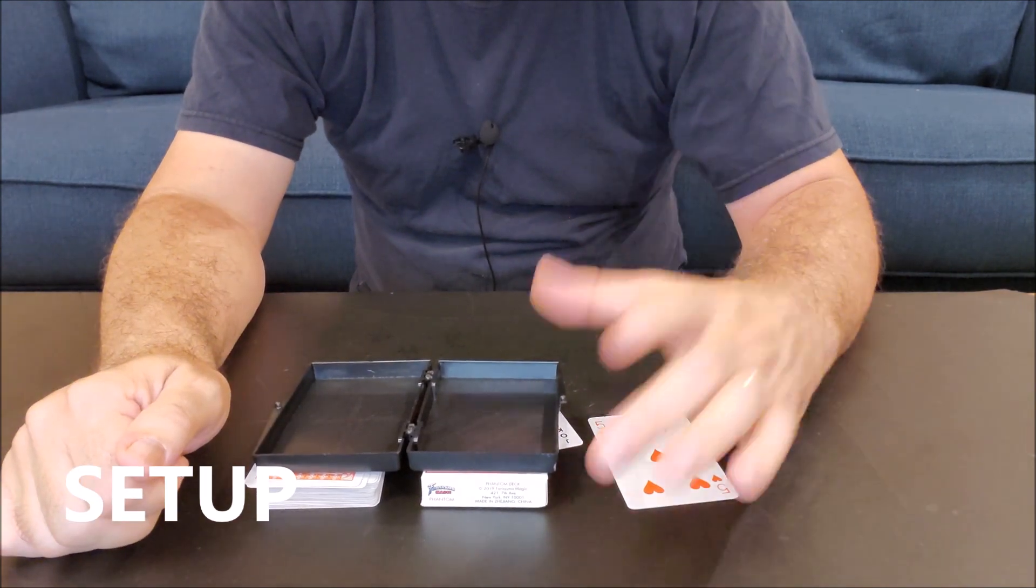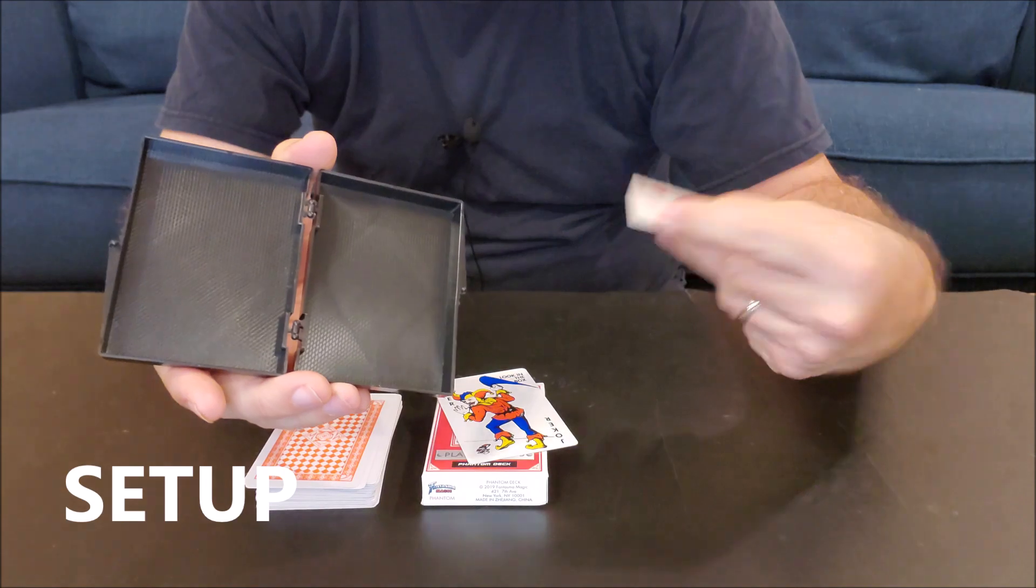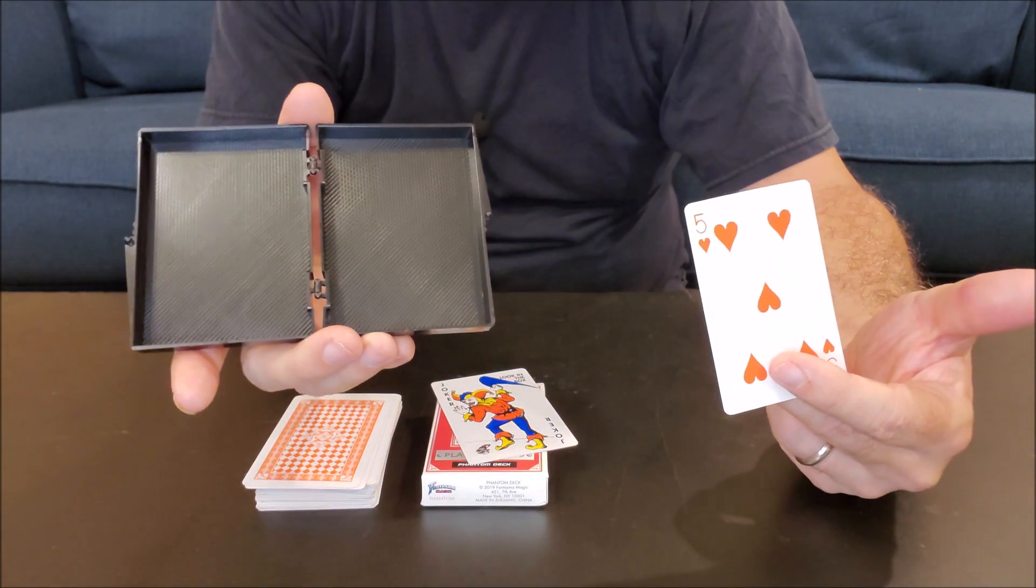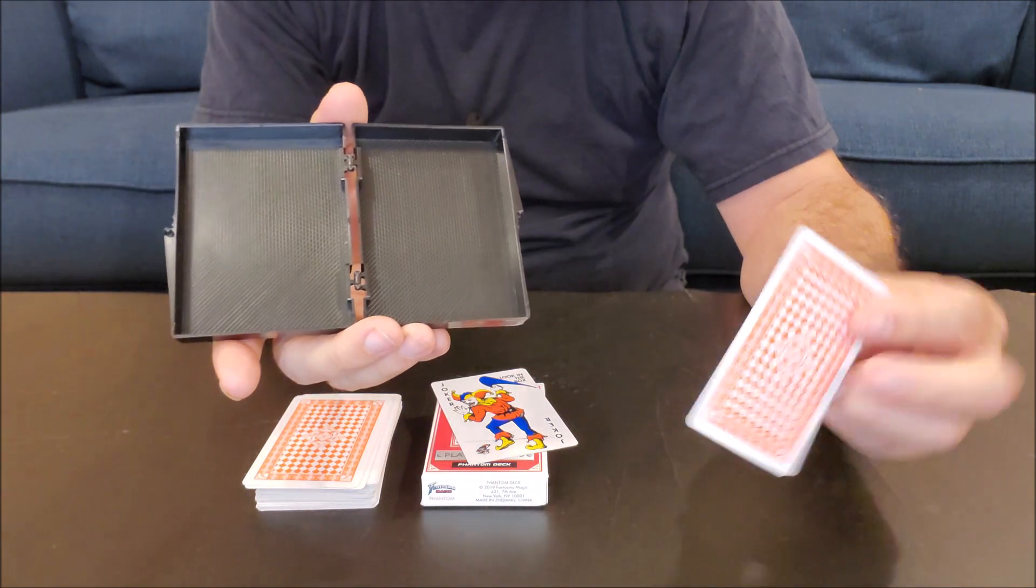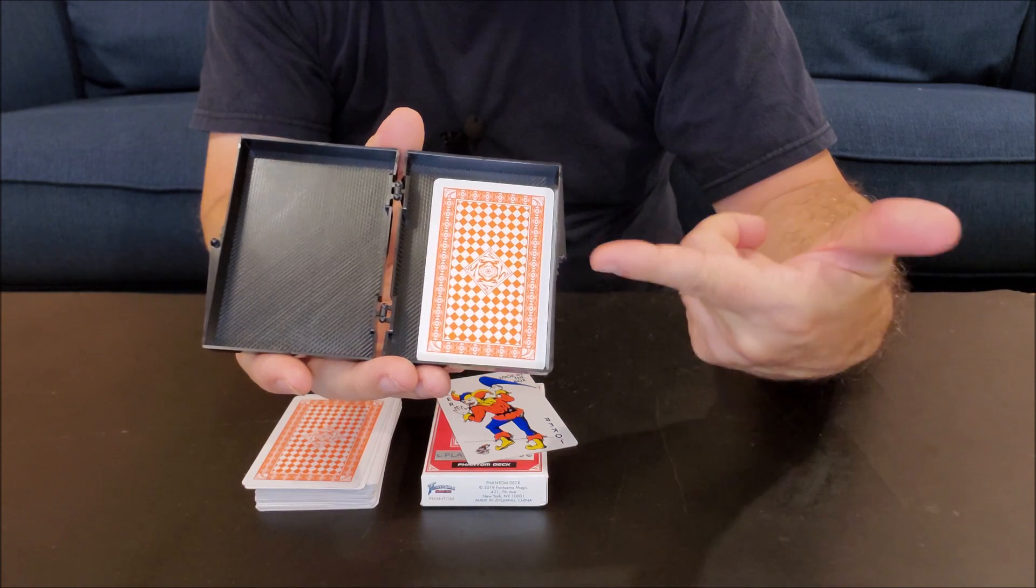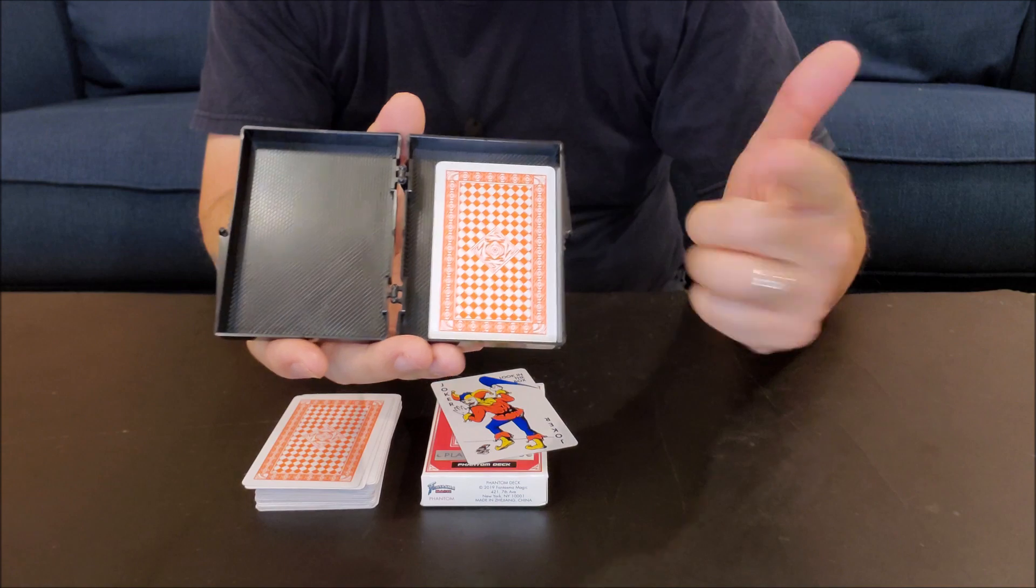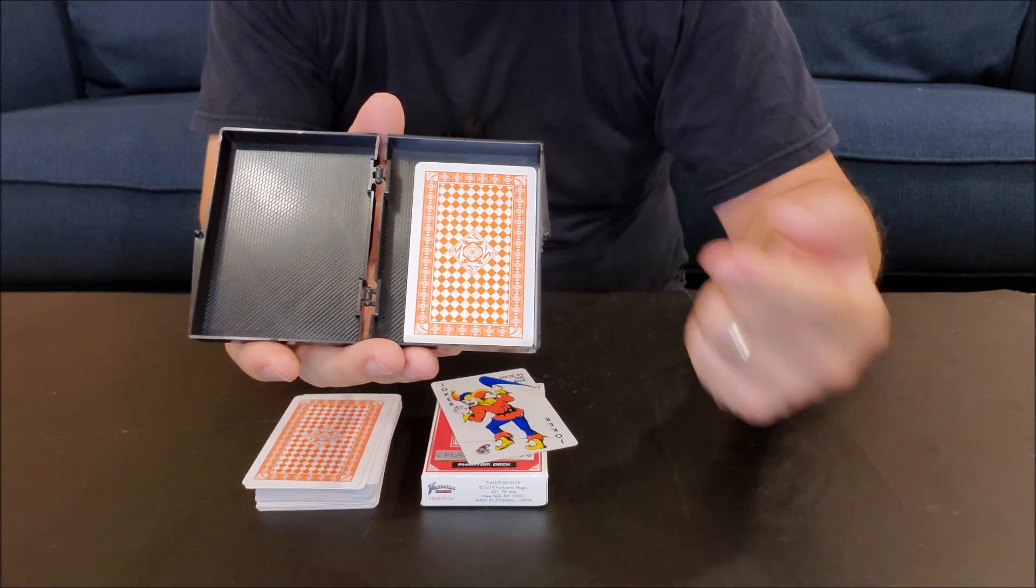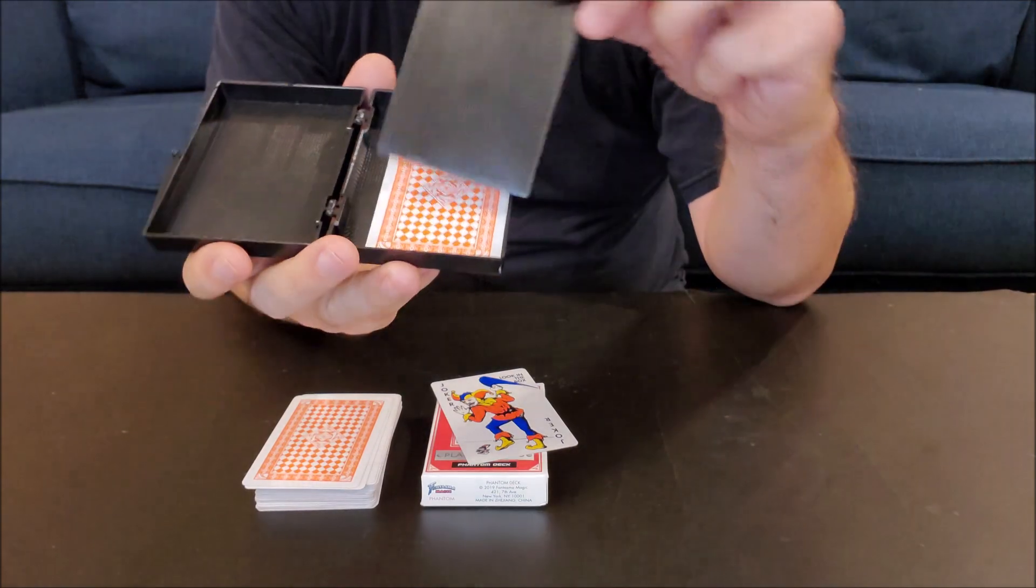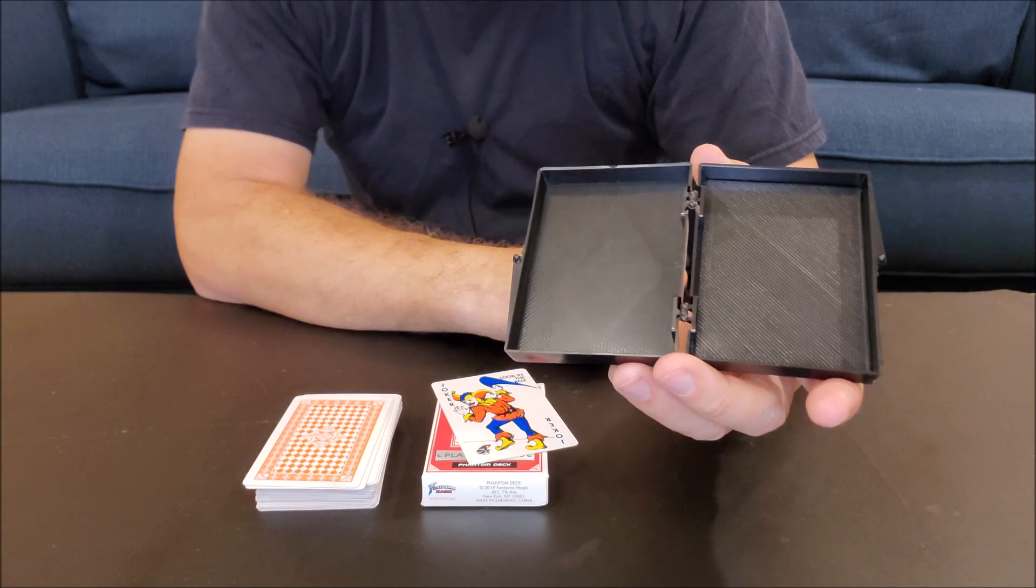So to do today's magic trick, we're going to have to do a little bit of setup. You need to take one of the extra five of hearts that you got in your Phantasma magic set and you're going to place it inside the lid of the change box face down. This is my lid. It's on the left side of me right now and I placed my extra five of hearts face down.